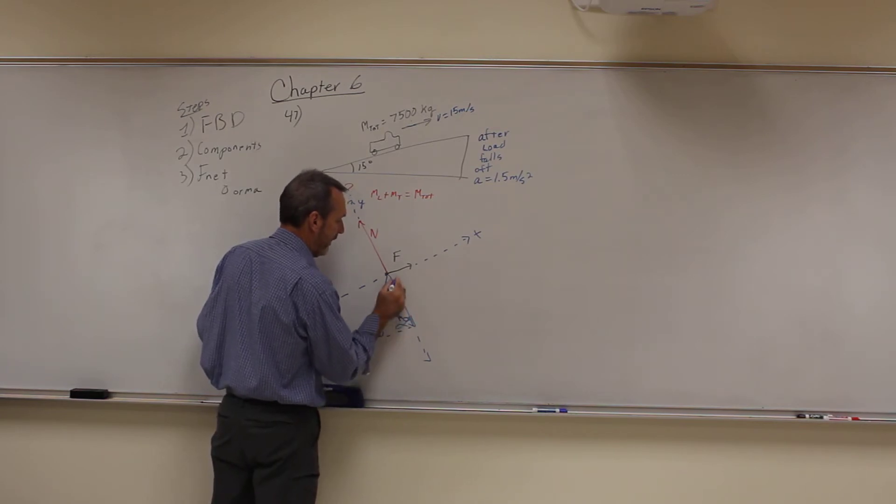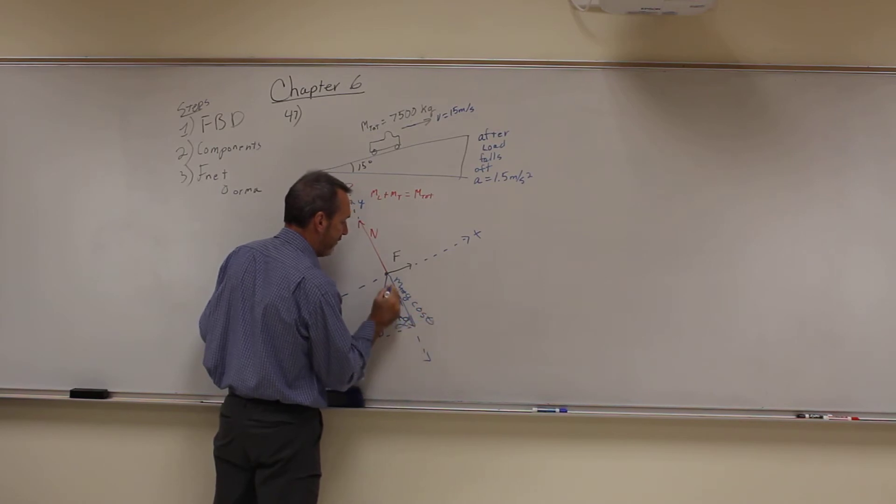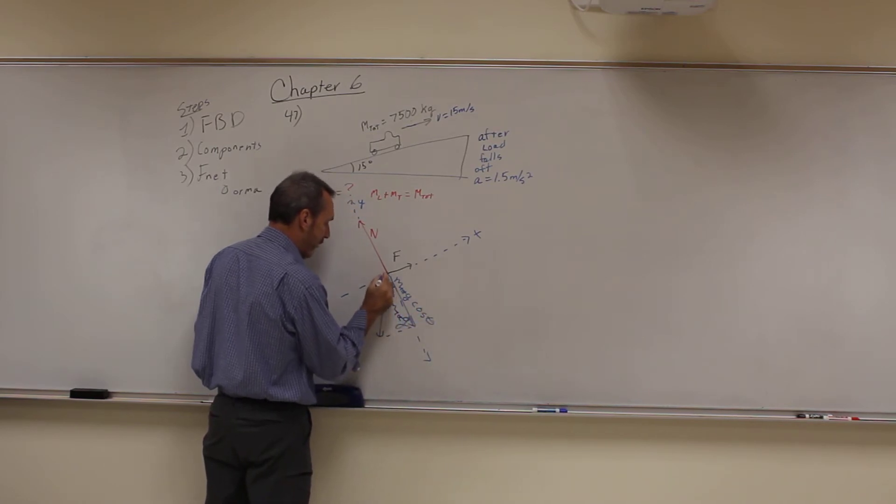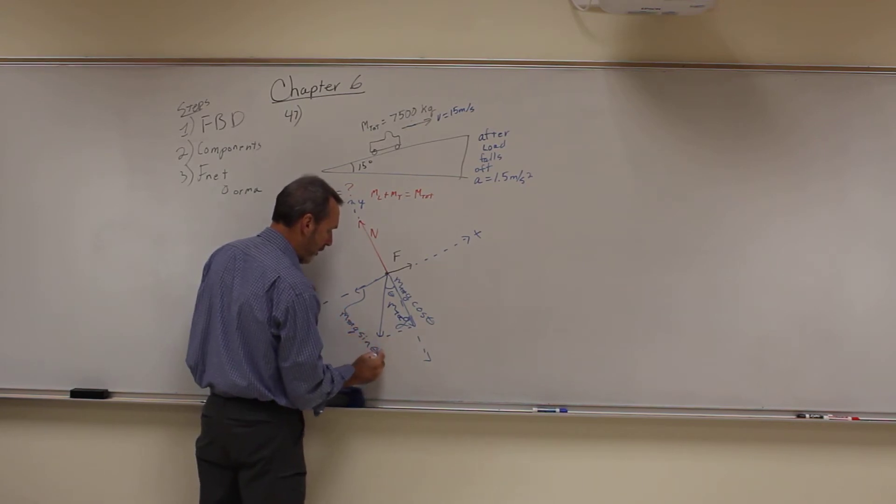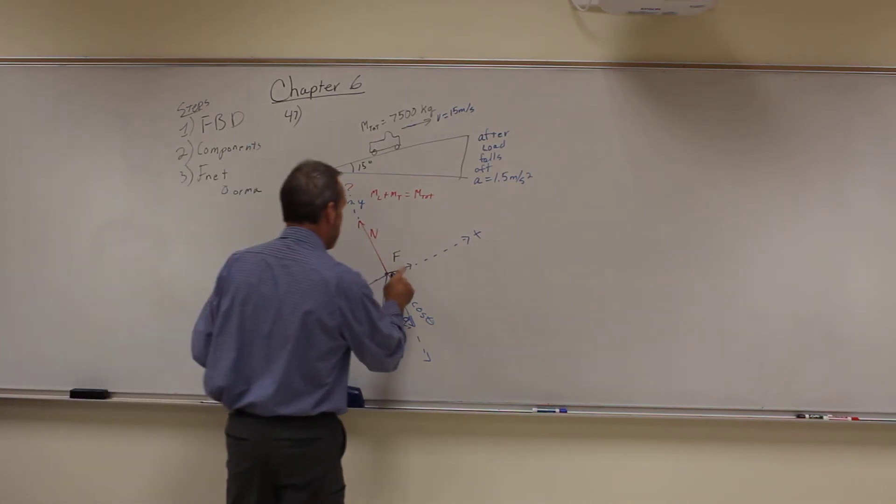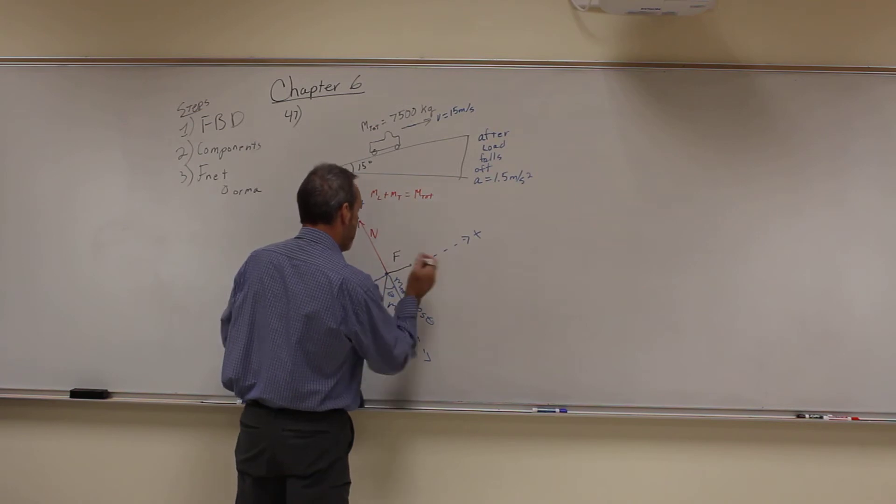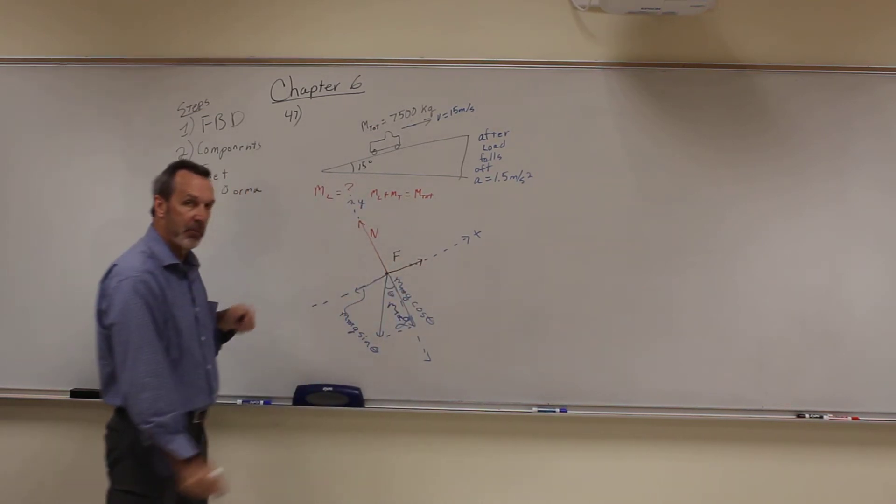So this component here is going to be m total g times the cosine of theta, because remember that's theta. And then over here, this one is m total g sine theta. Now, in this case, I'm going to make my F a little bit longer. If it's going at a constant velocity, that force has to match that one.